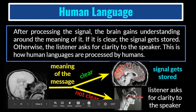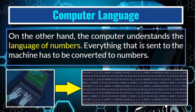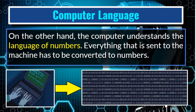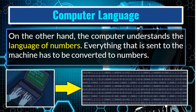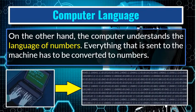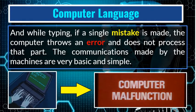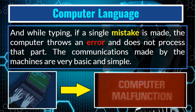And if it is not clear, the listener asks for clarity from the speaker. On the other hand, computers understand the language of numbers — everything sent to the machine has to be converted to numbers, meaning machine language. If a single mistake is made while typing, the computer throws an error and does not process that part. The communication made by machines is very basic and simple, not complicated like human language.